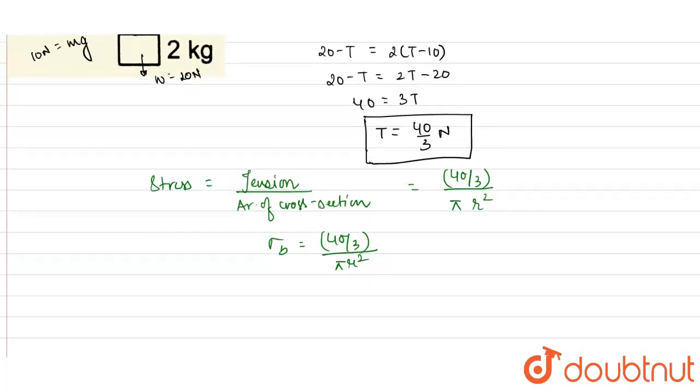The breaking stress is given to us as 2 × 10^9 N/m². So we put the value: 2 × 10^9 = 40/3 divided by πr².